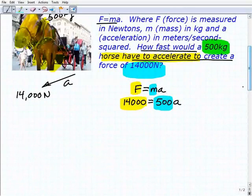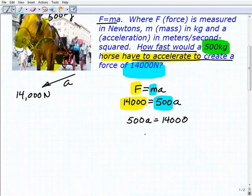If you don't like the way this looks, it's equivalent to this: 500 times a equals 14,000. Sometimes students get a little hung up that the variable's on the right-hand side. It doesn't make a difference whether the variable's on the right-hand side or the left-hand side. The same procedure is still going to take place. So how do we solve for a? What did we learn in the lesson to solve for this variable?